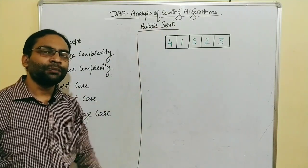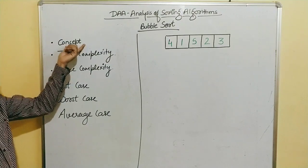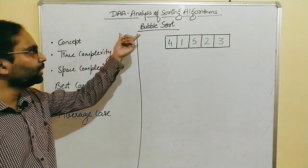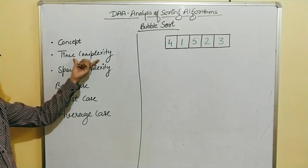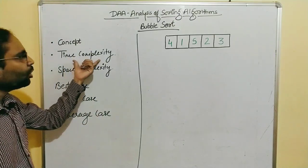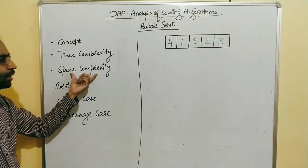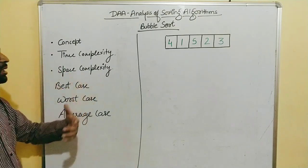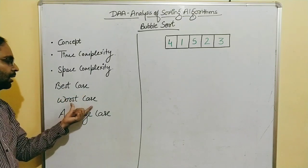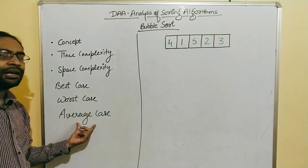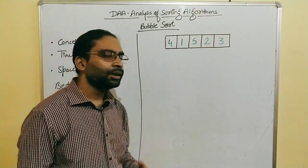Let's understand what we study in this lesson today. We'll first talk about the concept of bubble sort and how it is done. Then we'll discuss the time complexity, the space complexity, and the best case, worst case, and average case complexity.